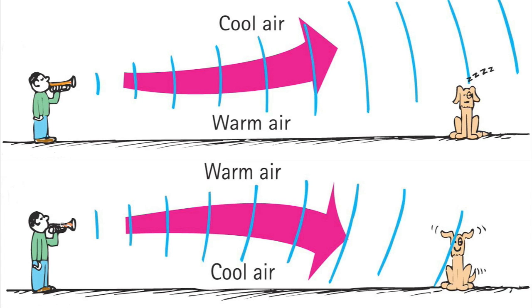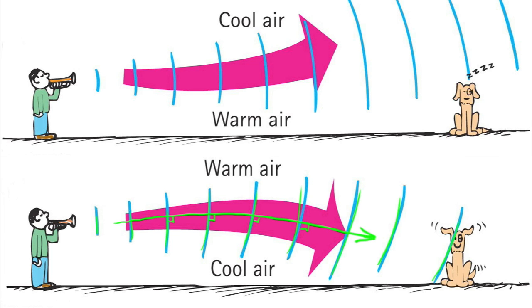The opposite occurs when air near the ground is cooler than air above. Then sound bends toward the ground. Again, the directions of sound waves are always at right angles to the wavefronts. As the wavefronts are bent, the direction of wave travel bends also.